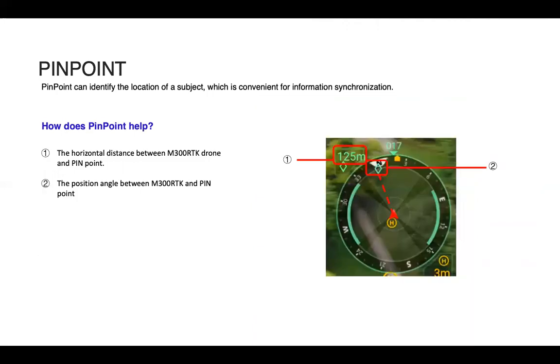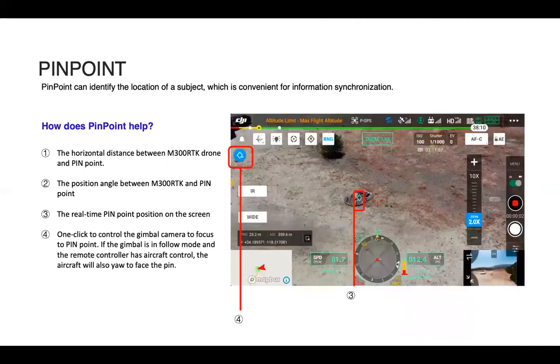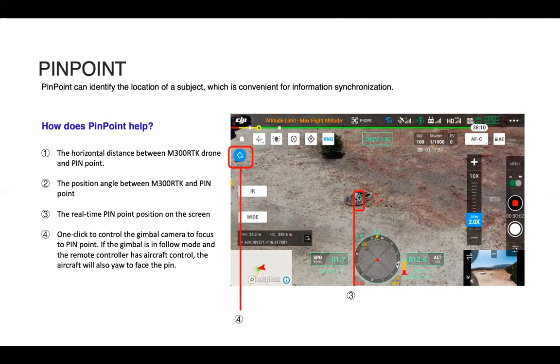Two ways Pinpoint helps: you see the horizontal distance between the drone and the pinpoint within the navigation display there, and then also the position angle between the drone and the pinpoint. So if you'd like to fly to or towards or face the pinpoint, you can easily complete all those actions. In the latest update, we've also added one click to control the gimbal camera to focus on the pinpoint. So with the press of the button, the camera will rotate and be focusing on where you've placed the pin.